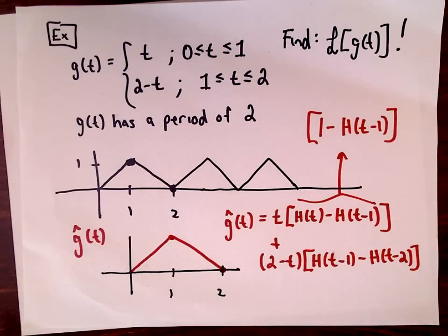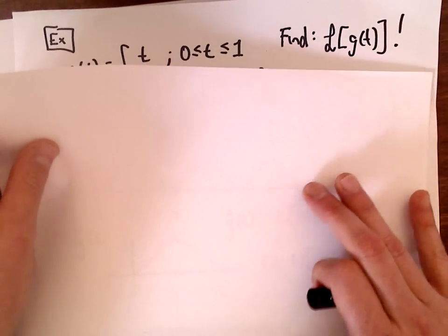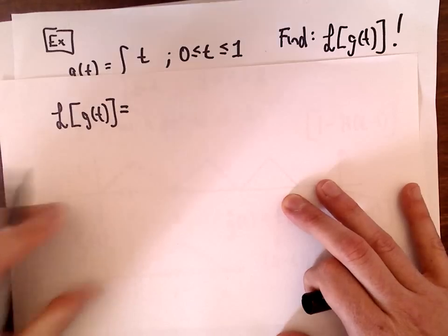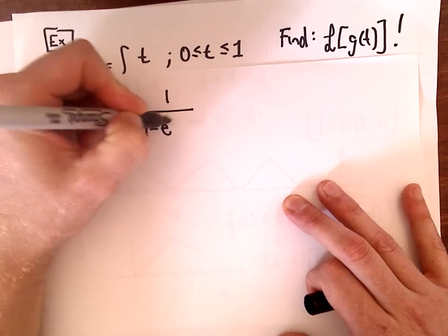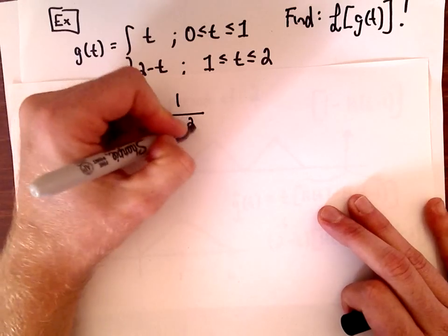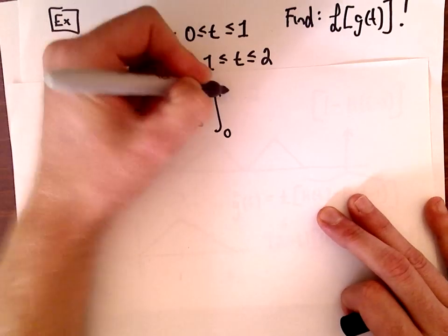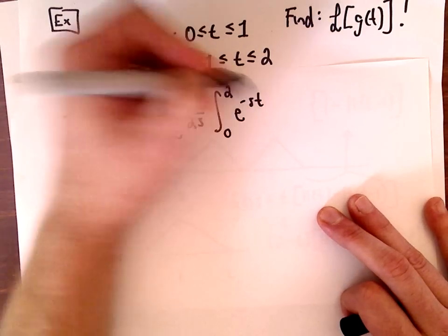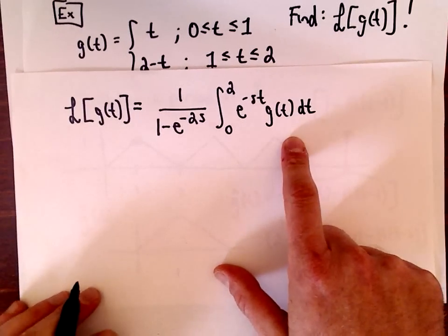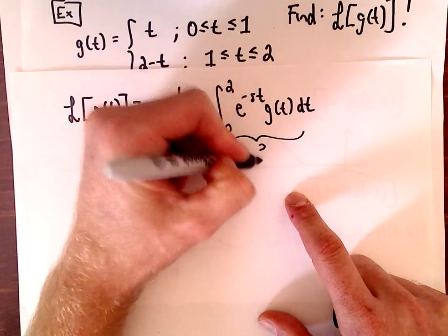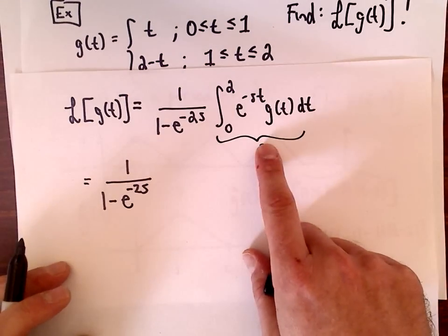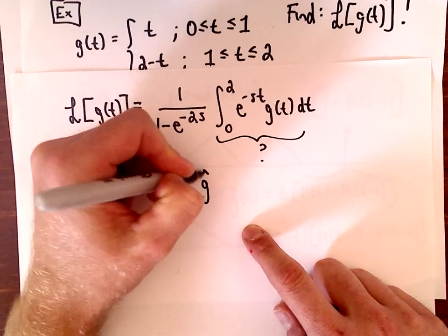We're trying to find the Laplace transform of g of t. Using our formula, that's 1 over 1 minus e to the negative 2s — since the period T equals 2 — times the integral from 0 to 2 of e to the negative st times g of t dt. This is the hard part to compute, but we said we can compute it by computing the Laplace transform of g-hat of t.